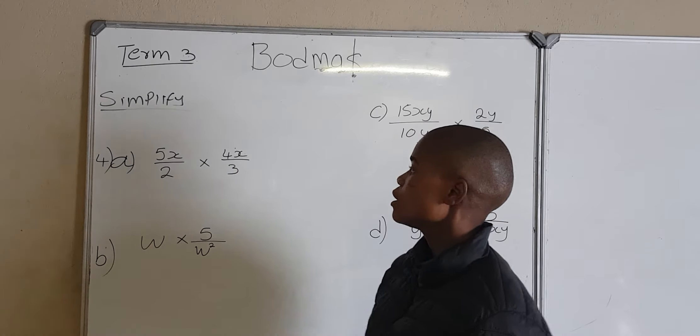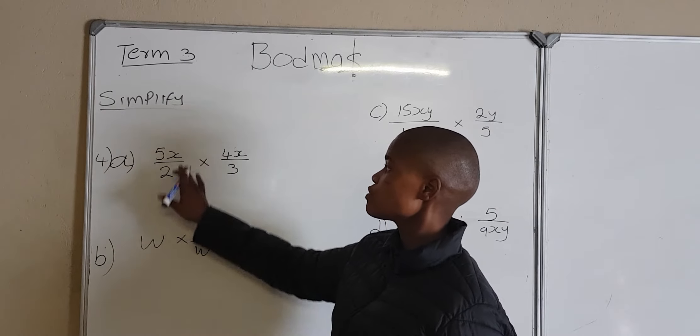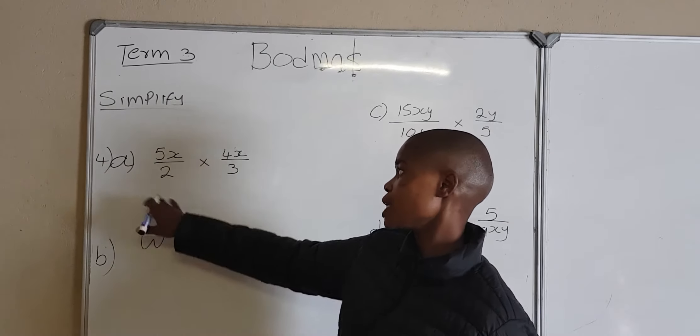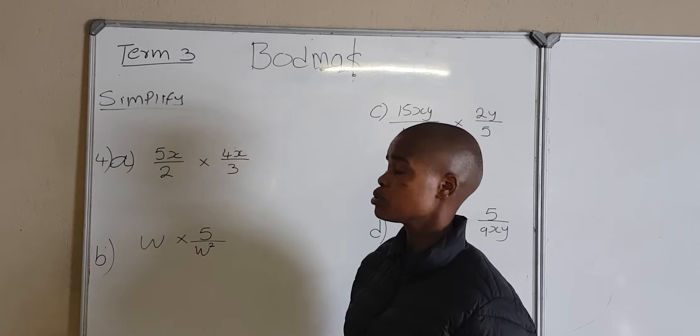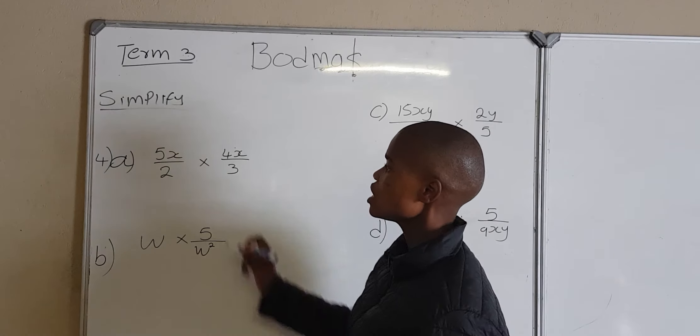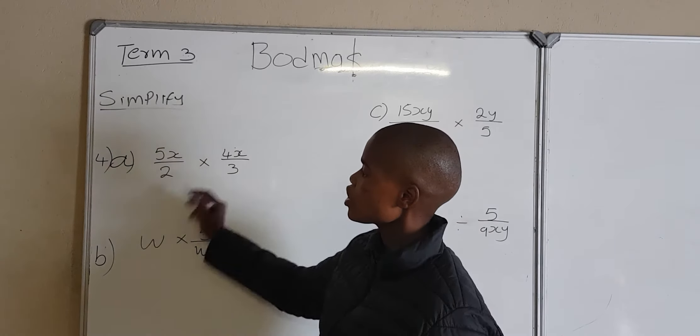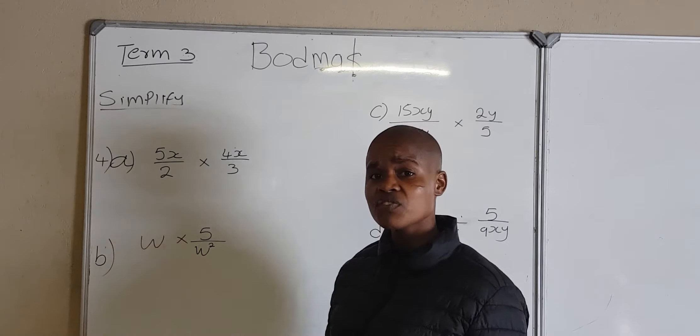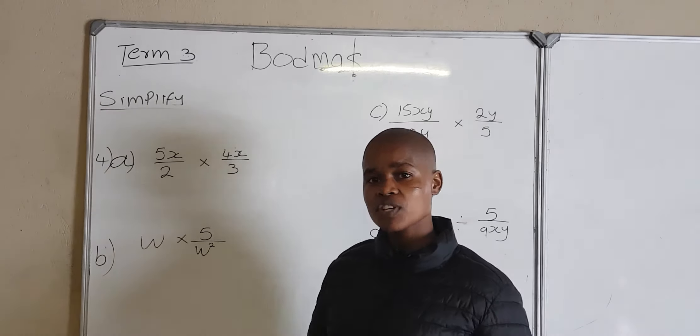So now we have got two fractions: 5 over x divided by 2, multiplied by 4x divided by 3. First of all, before you can do multiplication, just check your fraction if it can be simplified. If it can be simplified, simplify it first before you multiply.